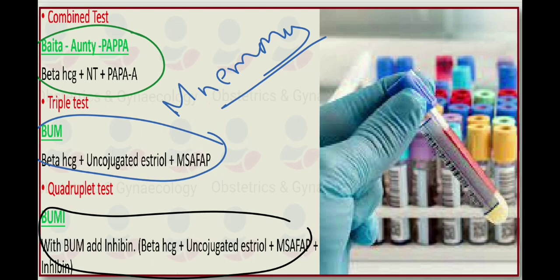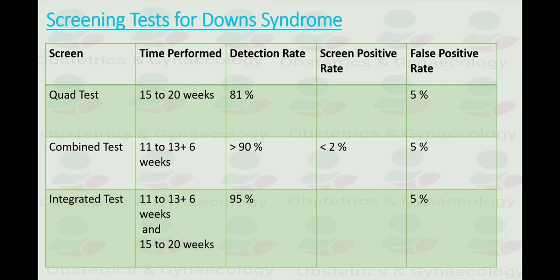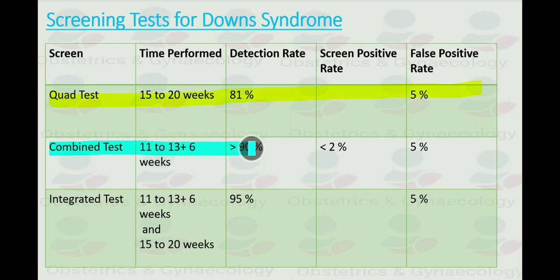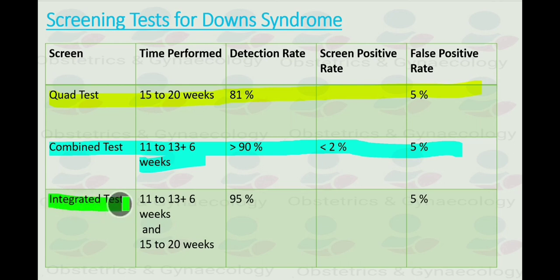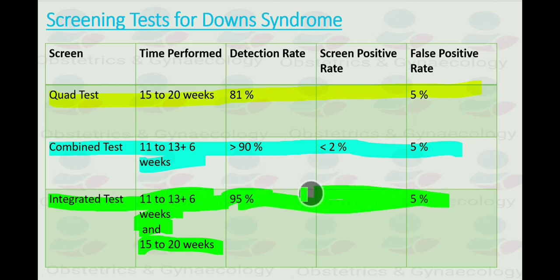We have a specific table for the screening tests of Down syndrome. The quadruple test is done between 15 to 20 weeks of gestation, with a detection rate of 81% and a false positive rate of 5%. The combined test is done between 11 and 13.6 weeks, with a detection rate of more than 90%, a screen positive rate of less than 2%, and a false positive rate of 5%. The integrated test, done between 11 to 13.6 and 15 to 20 weeks of gestation, has a detection rate of 95% and a false positive rate of 5%.